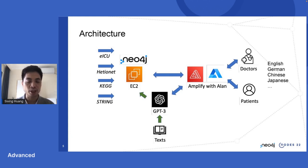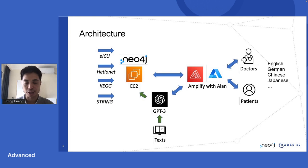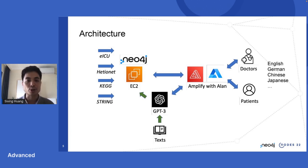On the Neo4j backend, we have integrated four different data sources. The three data sources — DisGeNET, KEGG, and String — are medical and biological knowledge graphs. The eICU is a patient electronic record from the ICU. GPT-3 plays the role of a Cypher translator, not a chatbot. So you can only ask domain-specific questions such as symptoms, disease, pathogen, drugs — questions that the database can answer. GPT-3 will only translate your question; it will not provide its own answer to the question.